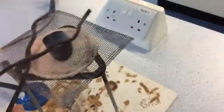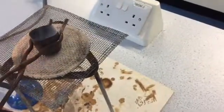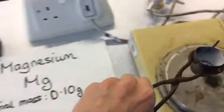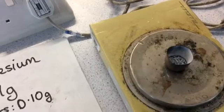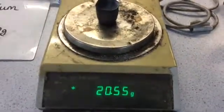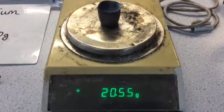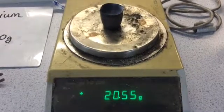So you can see that the tongs have a special bend in them which is designed so that they can pick up the crucible really easily. So I'm going to come over to the balance. And you can see that the mass is now 20.55.